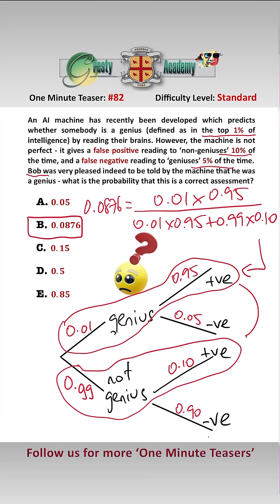which is answer B, so therefore Bob, you actually have a less than 1 in 10 chance of actually being a genius. Thank you.